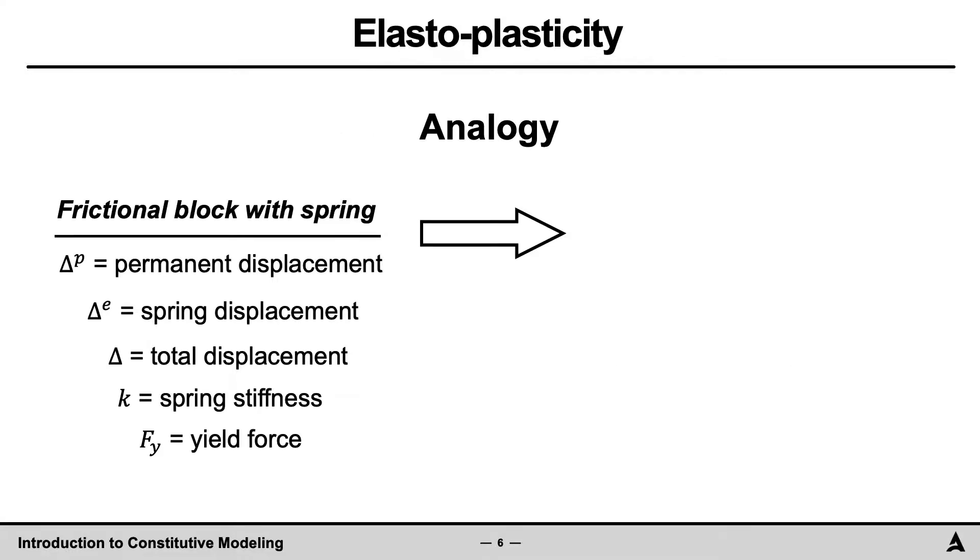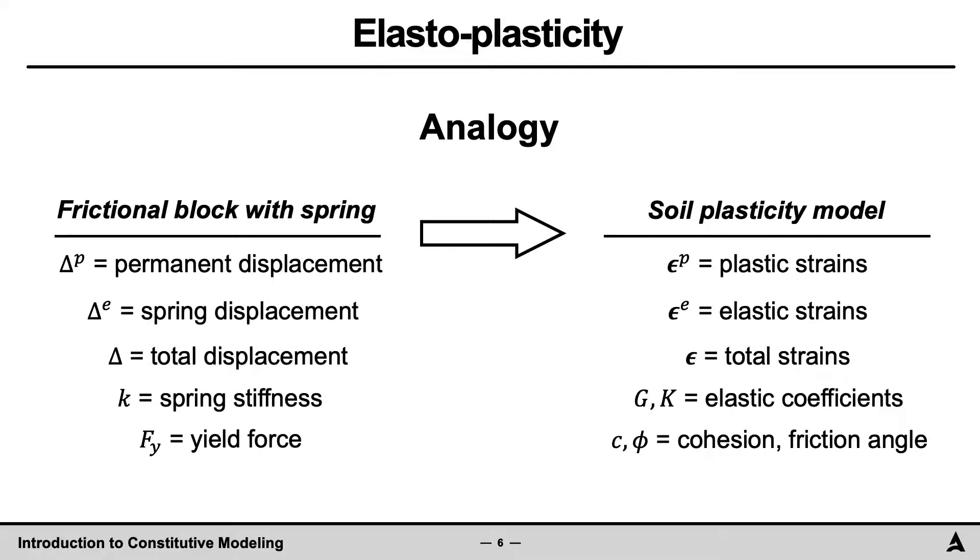This simple block example provides a direct analogy to an actual constitutive model in FLAC, for example, the Mohr-Coulomb model. In particular, the permanent plastic displacement of the block, delta p, is an analogy to the plastic strains. The bold font for epsilon highlights that this is a matrix-type form with normal strains and shear strain. Next, the spring stiffness, delta e, is an analogy to the elastic strains, epsilon e. And the total displacement, delta, is an analogy to the total strains, epsilon. Also, the spring stiffness, k, is an analogy to the elastic coefficients, for example, the shear modulus G and bulk modulus K. Lastly, the yield force, fy, is an analogy to the shear strength parameters of soil, for example, the cohesion and friction angle.